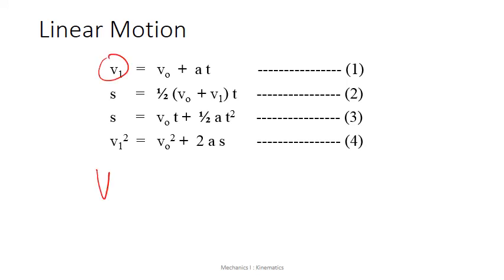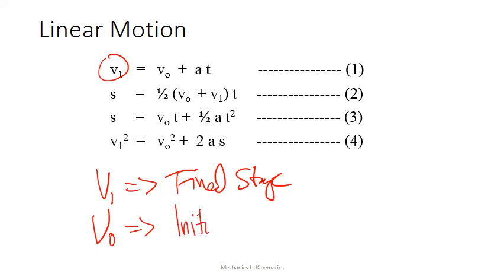V, or any quantity with a subscript 1, refers to the final stage of that particular motion. The notation with a subscript 0 refers to the initial stage. Let us now take a look at how we can actually derive these four kinematics formulas.